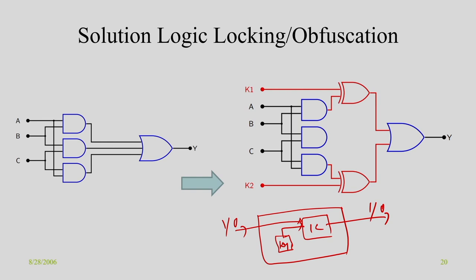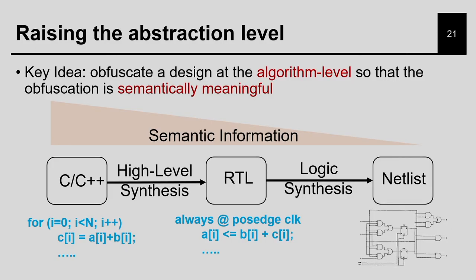That is the key idea of logic locking, and most of the work on logic locking is actually on the gate-level circuit. Our discussion topic today is: can we do something during high level synthesis so that the RTL generated by HLS is already locked? That means, given input-output behavior, I will generate RTL which has the same input-output, plus an additional key. The high level synthesis will say that this circuit is locked with say 200-bit keys and the correct value of the keys is this.